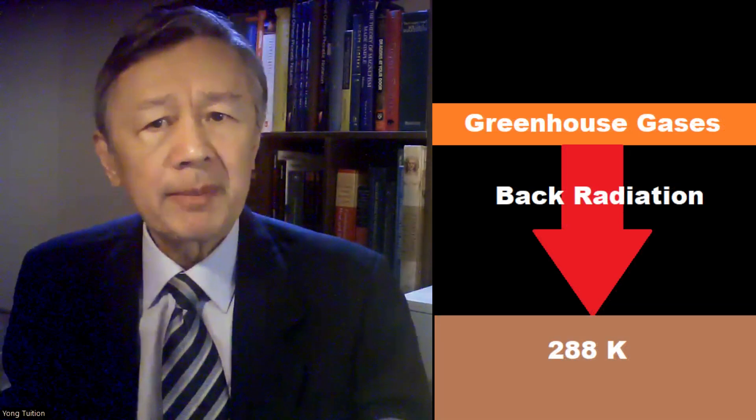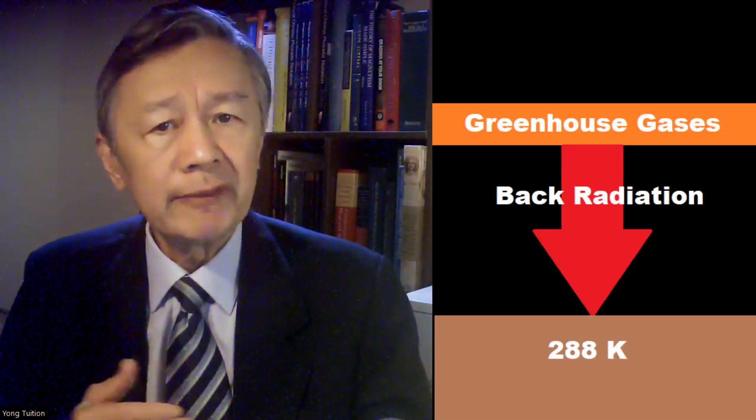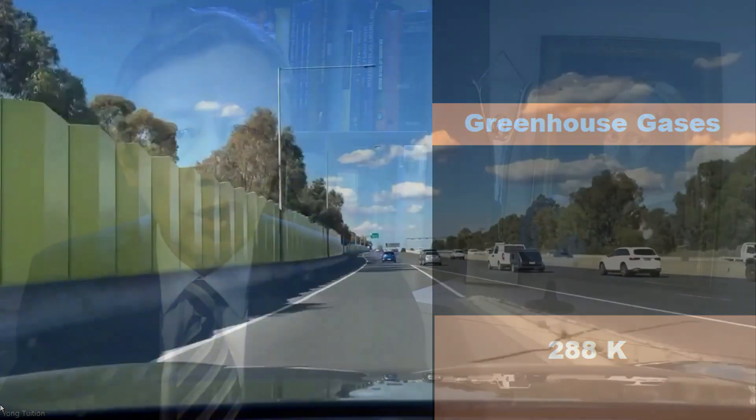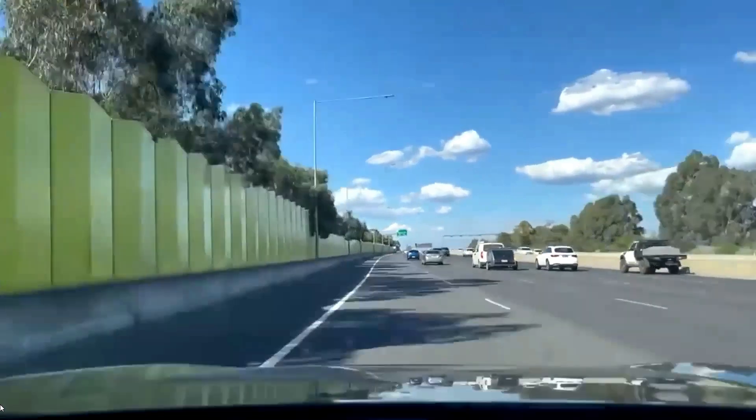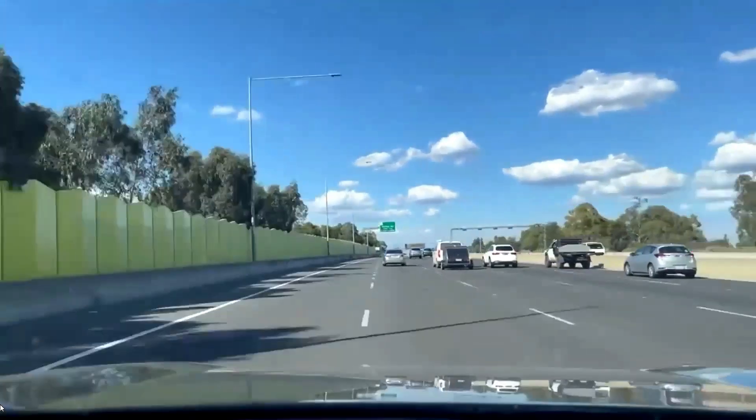Indeed, this idea could kill Trenberth's 40-year unintelligible diagram too. The original idea to introduce the greenhouse effect hypothesis is to heat up the surface of Earth from 255 Kelvin to the current 288 Kelvin by means of so-called back radiation from the greenhouse gases to the surface. Therefore, one could expect such back radiation would eventually be zero once the surface temperature has reached 288 Kelvin, simply because there is no reason to keep heating up the surface all the time.